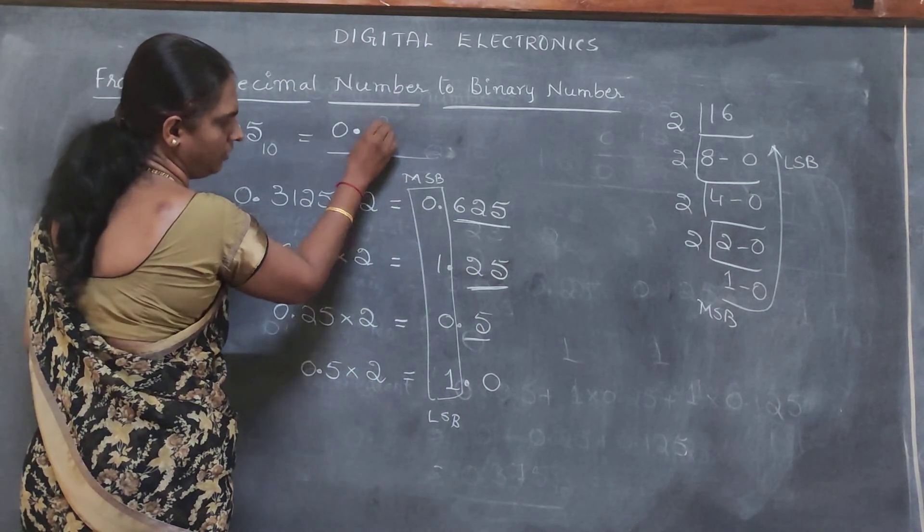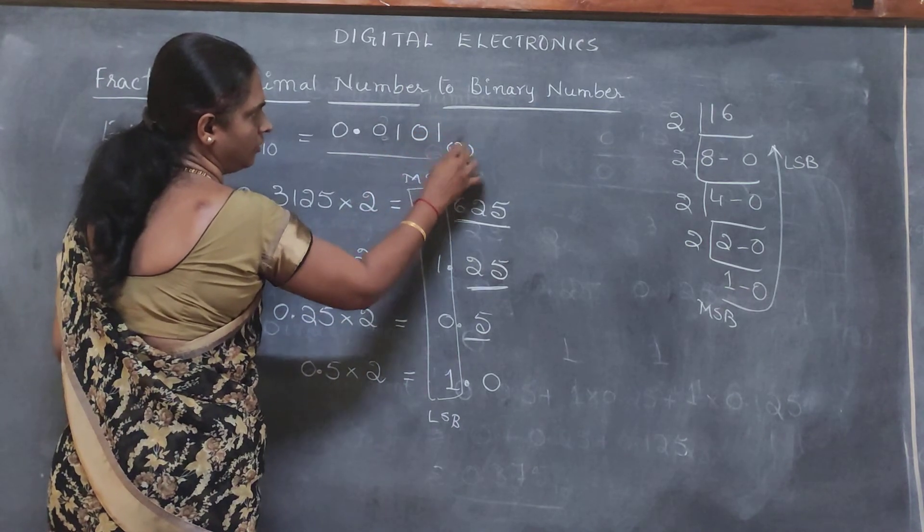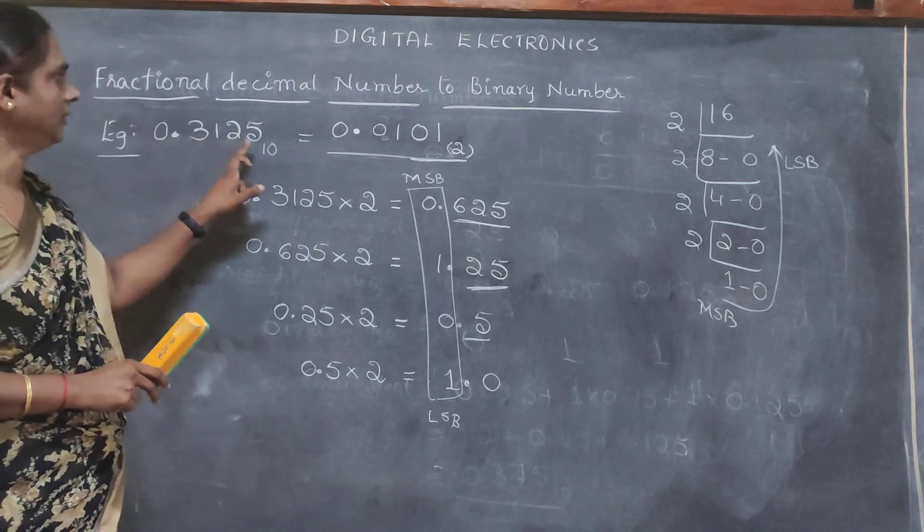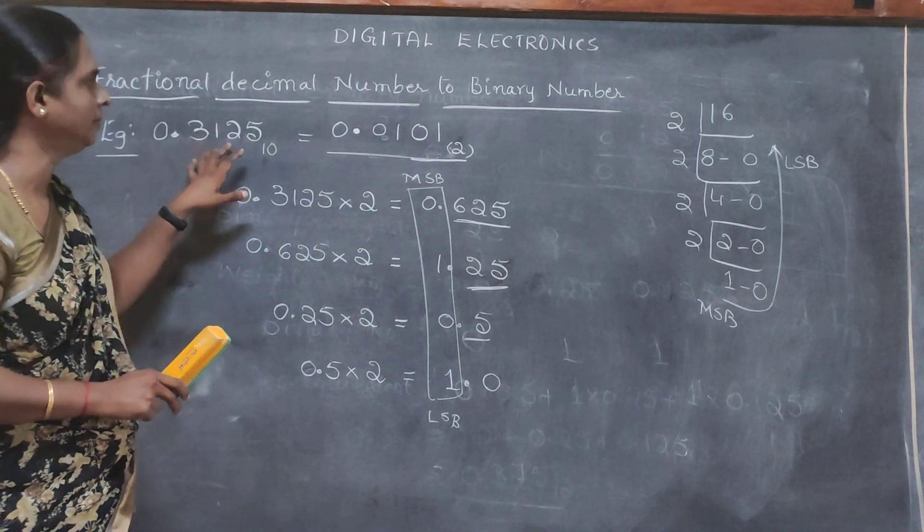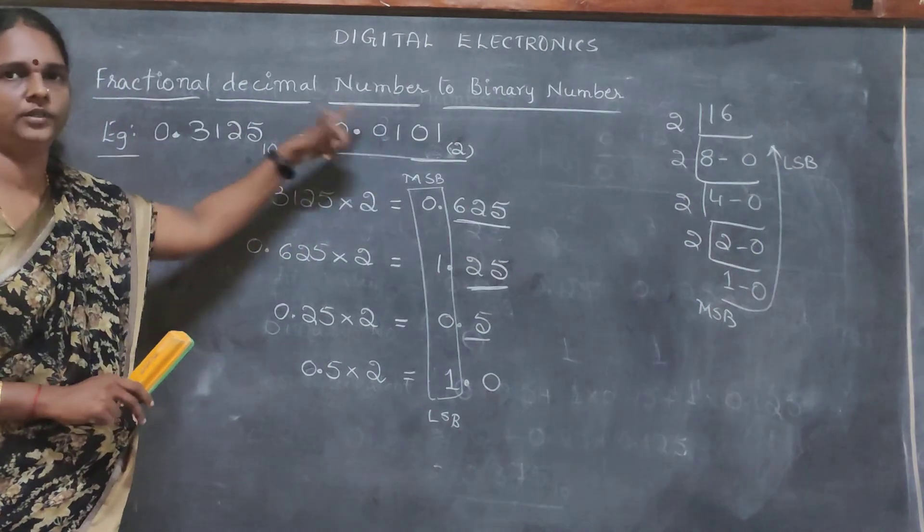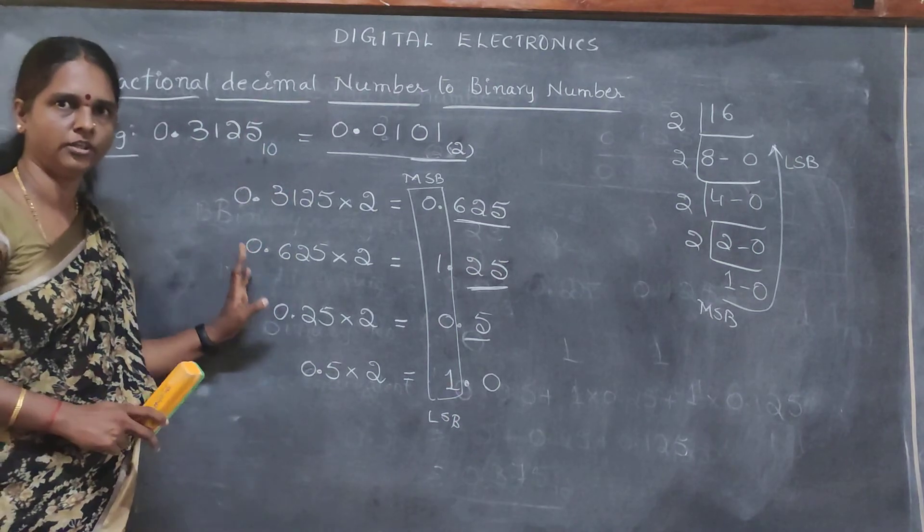So, start from here, 0, 1, 0, 1. This is the value of 0.3125, equivalent of 0.3125. You may convert this to decimal and cross-check the value, whether this is the right one.